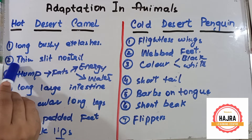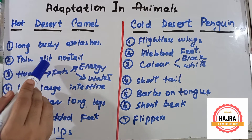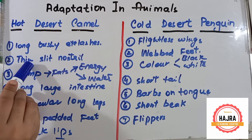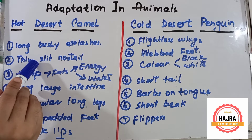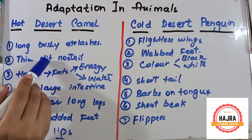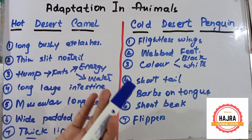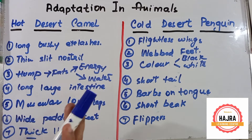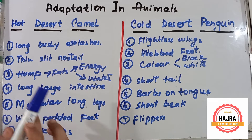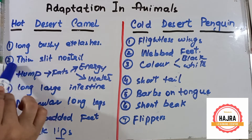Number two point: they have thin slit nostrils. The function of these nostrils is that they can close and help to protect the camel from blowing sand, so sand will not enter the nose. This is the second adaptation.